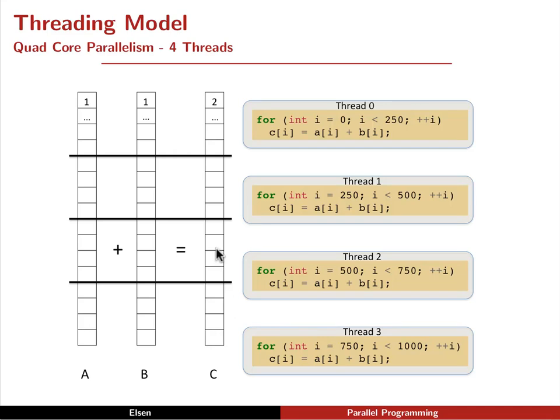But this is about as far as it goes on the CPU. Maybe you have a six-core processor, but you can't really go much farther. Each thread would still have a loop inside of it and loop over some range of values.